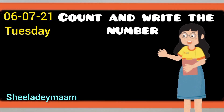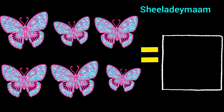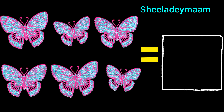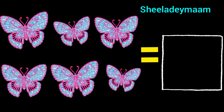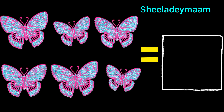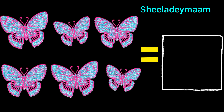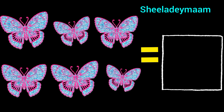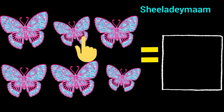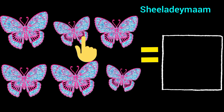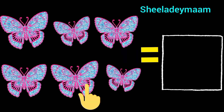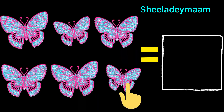Now move on to the next picture. Children, what are these? These are butterflies. Children, now count the butterflies with ma'am. 1, 2, 3, 4, 5, 6.